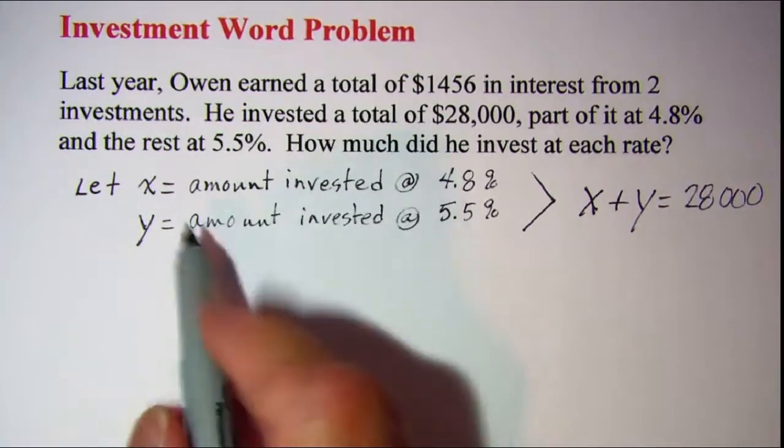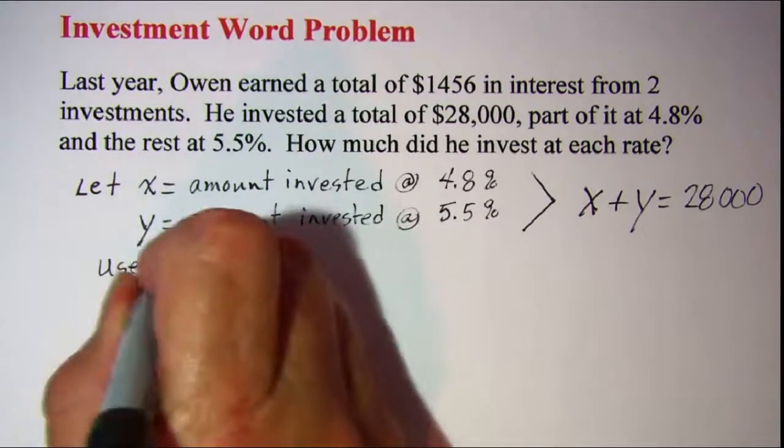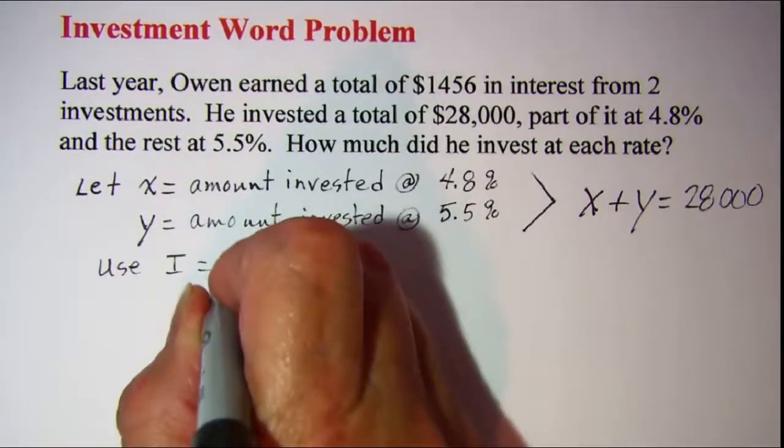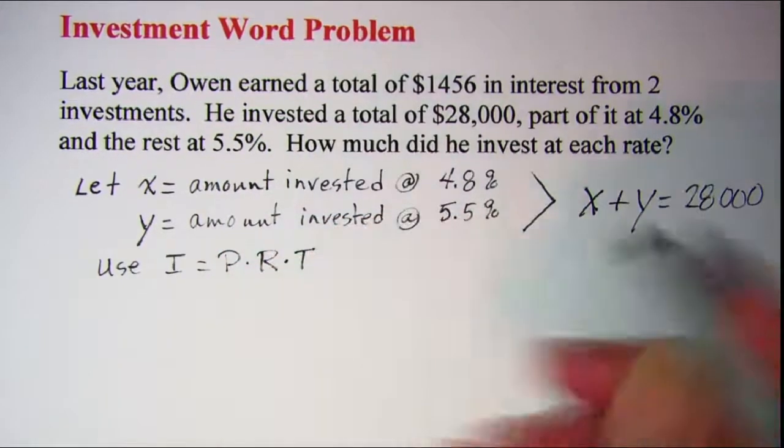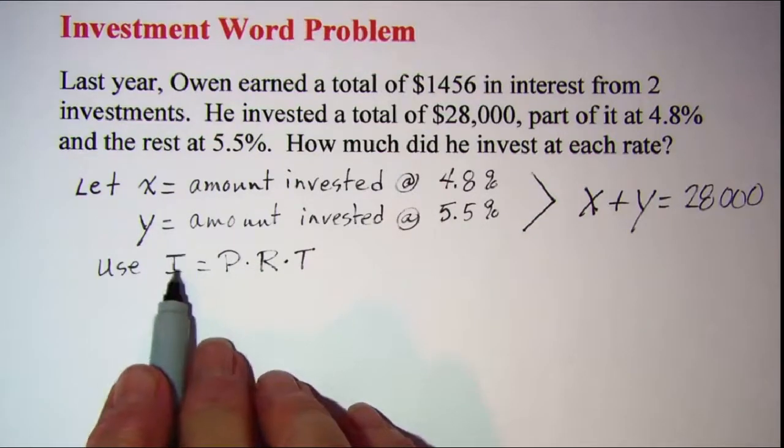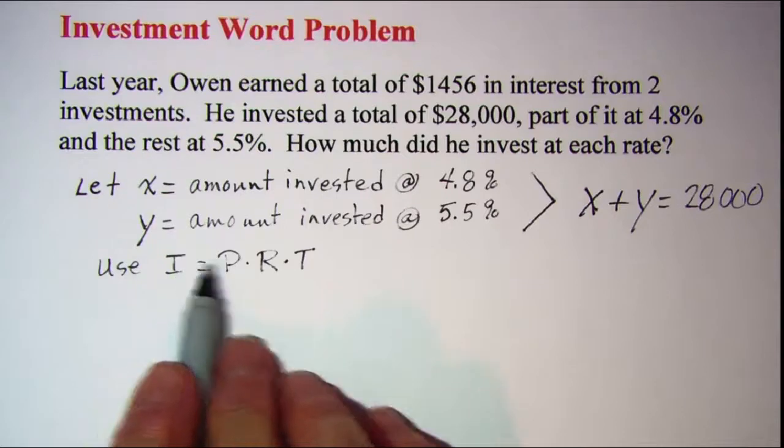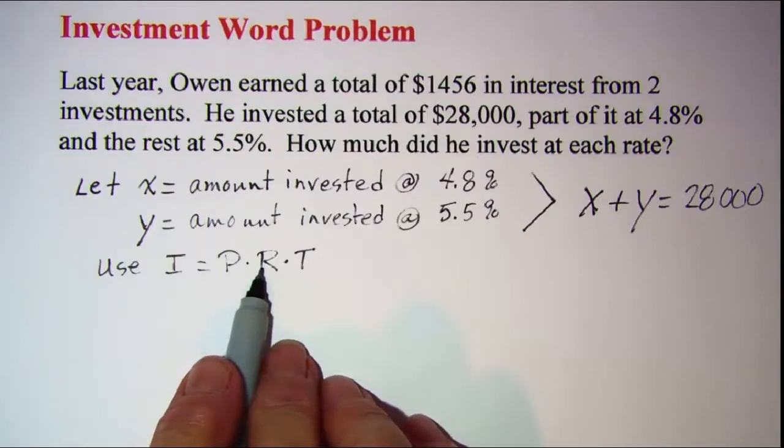Now as far as interest goes, we need to use the equation interest equals principal times rate times time. Principal is the amount that you are investing. The interest is the amount that you earn on that investment, and the rate is the percent at which you earn interest.